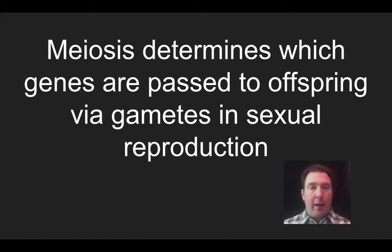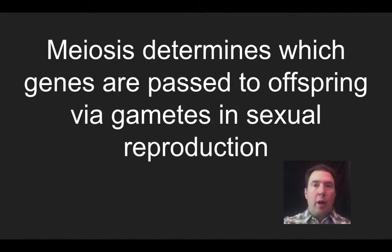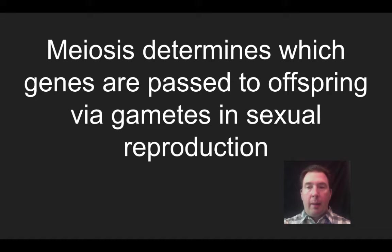Hello everybody, this is Mr. Matthew again for Honors Biology. We're going to talk about how meiosis determines which genes are passed on to offspring via gametes in sexual reproduction. In this video, I'm going to do a quick overview of meiosis, and I'm also going to talk about why it's important for the daughter cells to have half the genetic information of the adult cells.